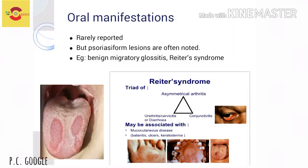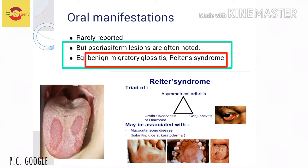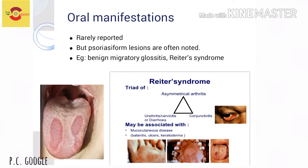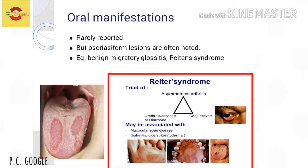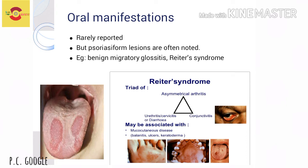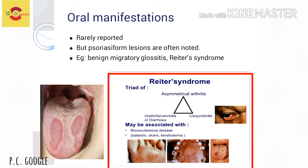Psoriasis is usually rarely reported in the oral cavity, but psoriasiform lesions which histologically resemble psoriasis are often seen — for example, benign migratory glossitis. Reiter syndrome is a triad of asymmetrical arthritis, conjunctivitis, and urethritis or diarrhea, often associated with mucocutaneous disease and keratoderma.